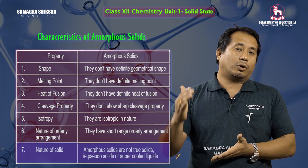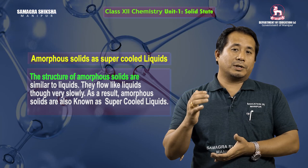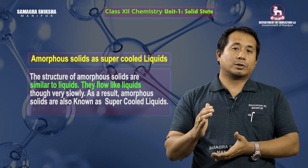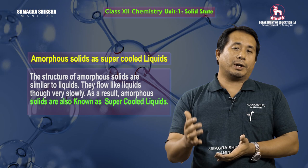Amorphous solids are not true solids; they are also called pseudo solids or supercooled liquids. The structure of amorphous solids is similar to liquids — they flow like liquids, though very slowly. As a result, amorphous solids are also known as supercooled liquids.